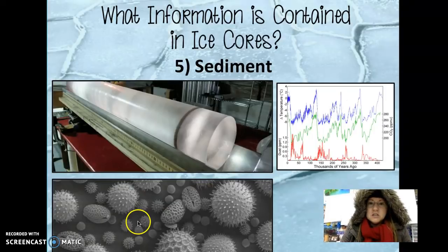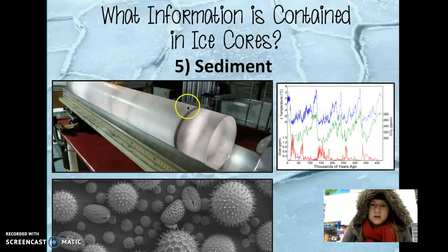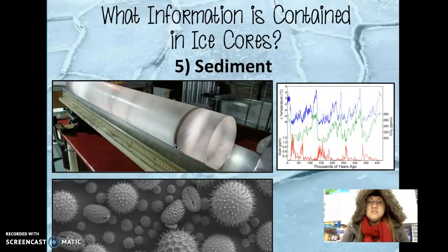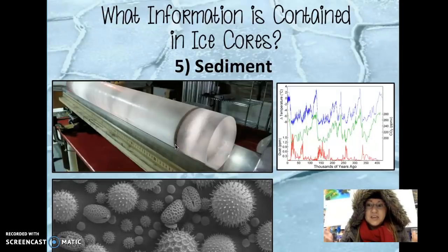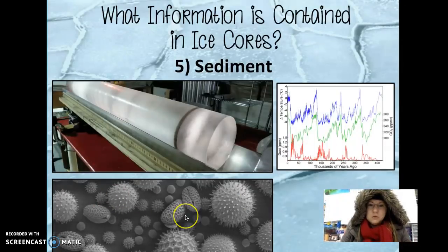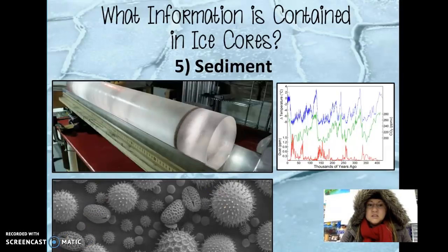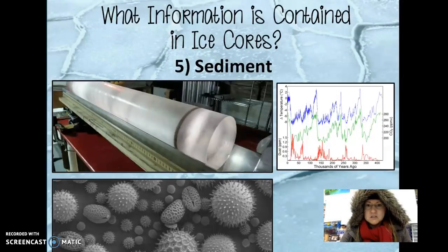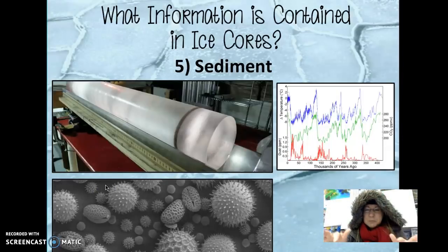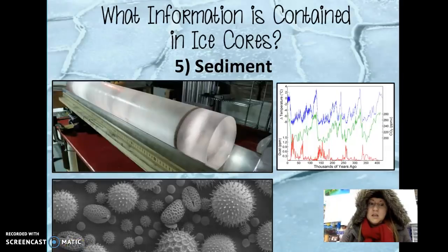Sediment is another thing found in ice cores, with several different types of material deposited. One striking feature in this ice core is a black layer — volcanic ash — indicating a past volcanic eruption. Also, pollen can be trapped in ice cores, as seen in microscopic views of different pollen types. Different types of dust also get deposited, as air currents carry fine dust particles hundreds of miles, kicking up from dust storms and then depositing with snow in Antarctica or Greenland.